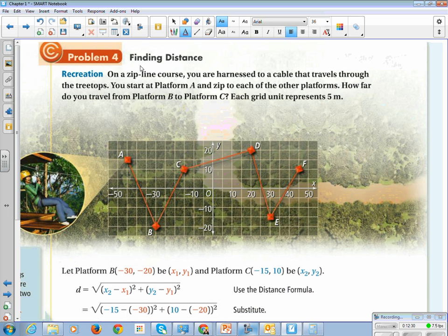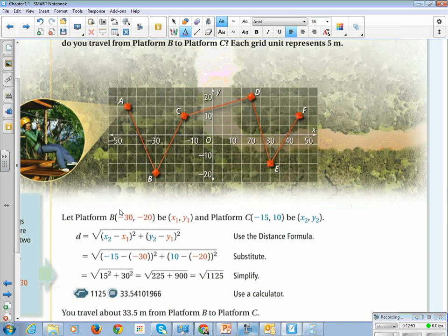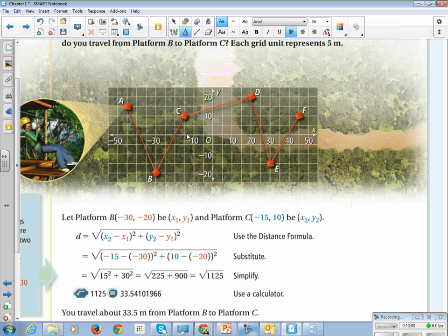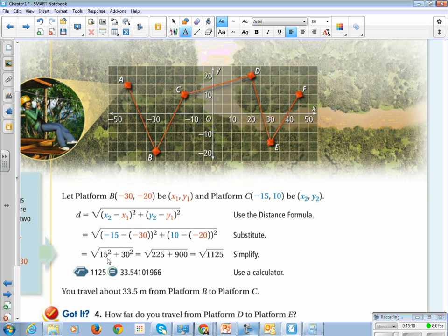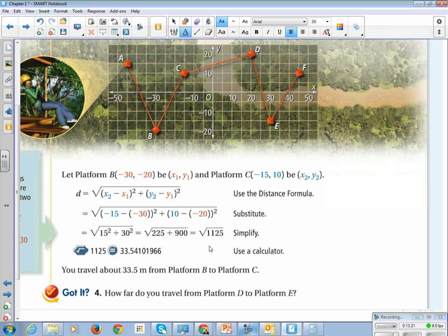Alright, so let's take a look at the zipline course. You're harnessed to a cable that travels through the treetops. You start at platform A, zip to each of the other platforms. How far do you travel from platform B to C? Each grid unit represents 5 meters. So B to C. So you find the coordinates first. B is at negative 30, negative 20, and C is at negative 15, 10. So you plug those into the formula. Negative 15 minus negative 30 is negative 15 plus 30 or 15. 10 minus negative 20 is 30. So D, square them, add them together, take the square root.